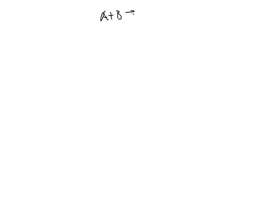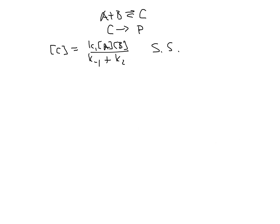Let's look at a different mechanism where we have A plus B in equilibrium with an intermediate C, and then C goes on to make products. In the steady-state limit, the concentration of C at any time is equal to K1 times A times concentration of B divided by K minus 1 plus K2. In the pre-equilibrium approximation, the concentration of C is going to be equal to the equilibrium constant for the first reaction times A times B.